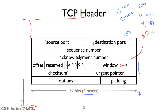The window field is the flow control window. It tells the endpoint how much received buffer space its sender has. So if you see a window of 20,000 that means there cannot be more than 20,000 outstanding unacknowledged bytes in this connection in that direction.